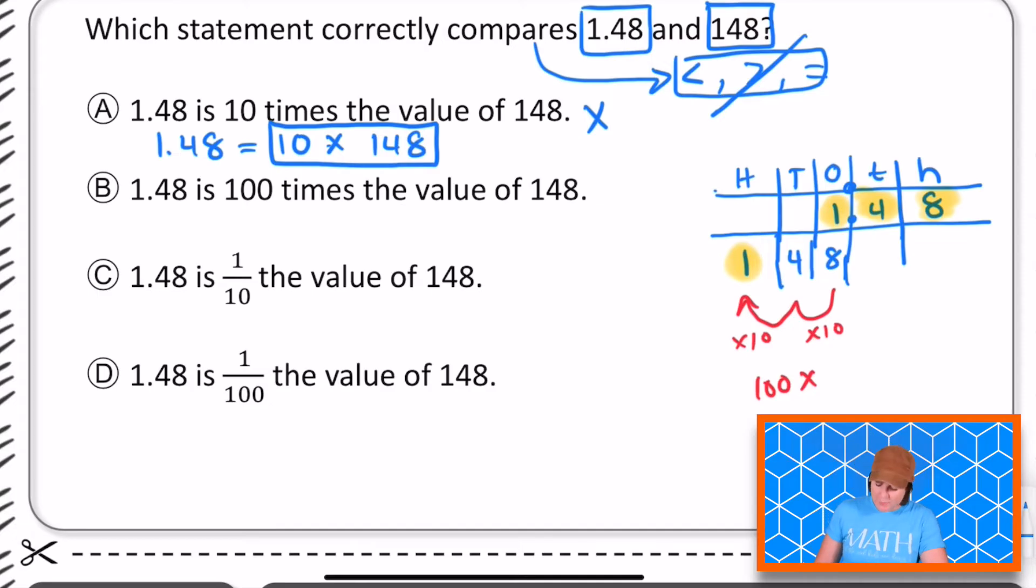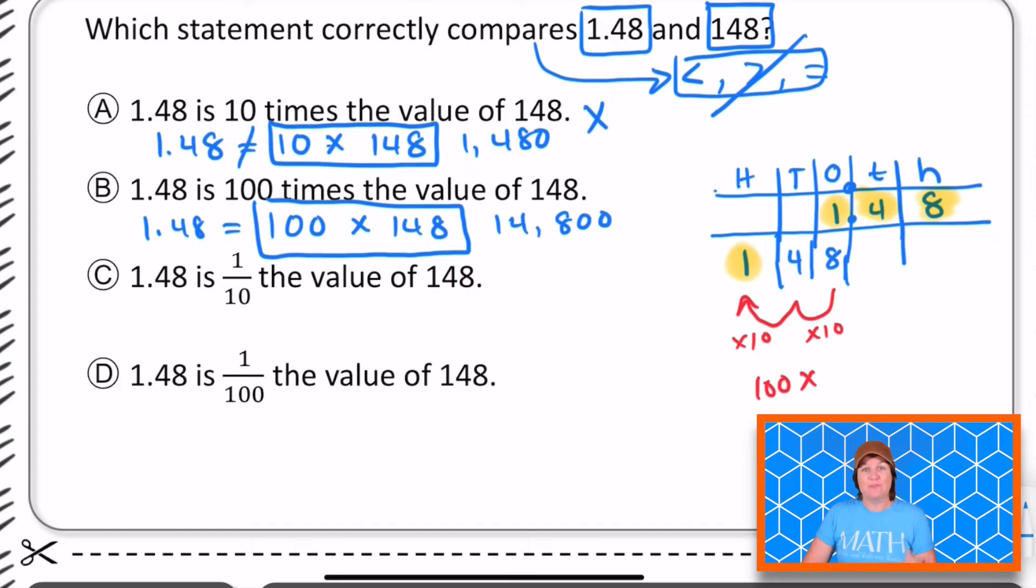For choice B, it says 1.48 is 100 times the value of 148. If I were to solve that, 100 times 148, that would make it even greater. That would make it 14,800. Up here would be 1480, which is not equal to 1.48. So B can also be eliminated.